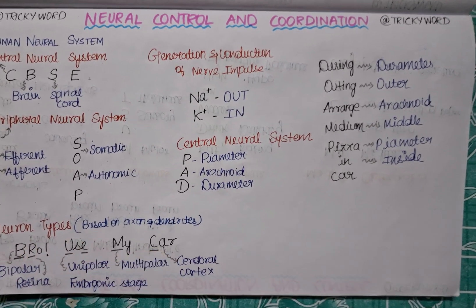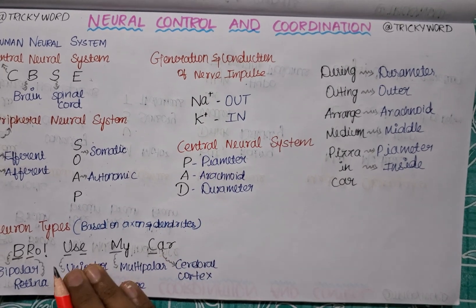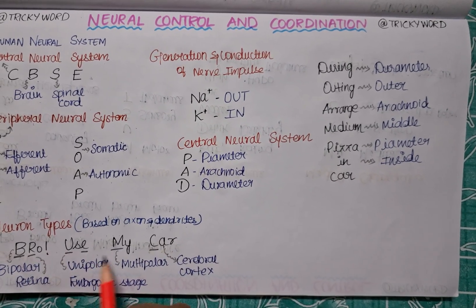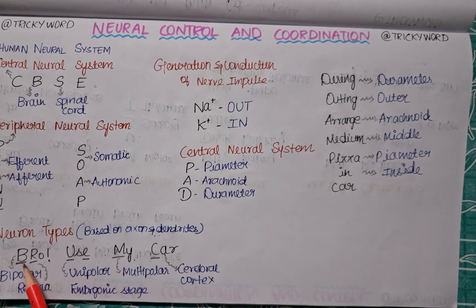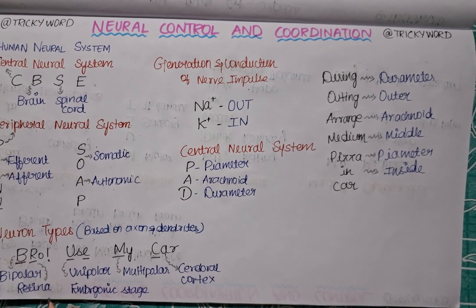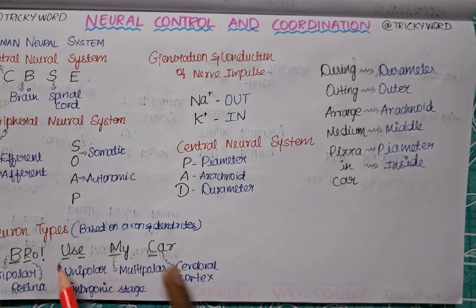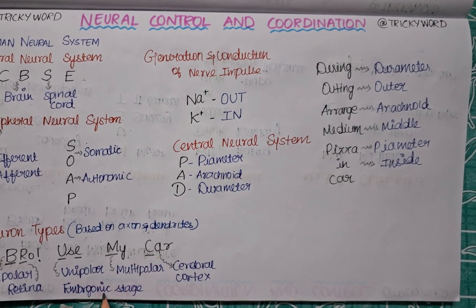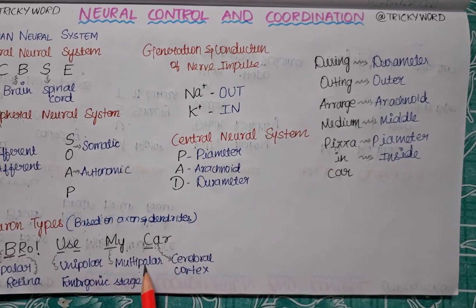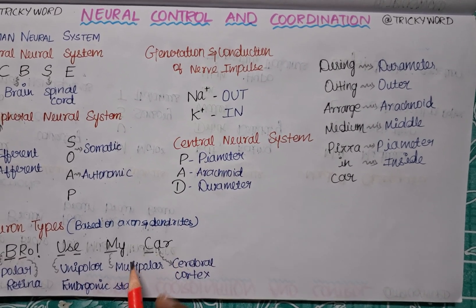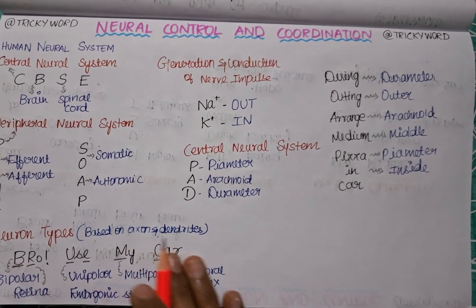Now we will look at types of neurons. Neurons are divided into three types based on the number of axons and dendrites present. The trick is 'Bro use my car' — BR: bro is for bipolar, R is for retina, so bipolar neurons are found in the retina. U is for unipolar, E is for embryonic stage — unipolar neurons are found in the embryonic stage. M is for multipolar, C is for cerebral cortex — multipolar neurons are found in the cerebral cortex.